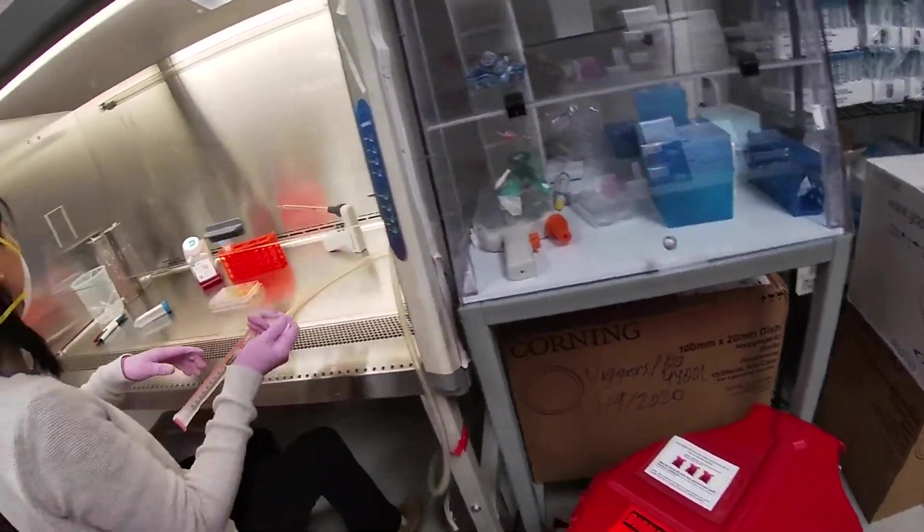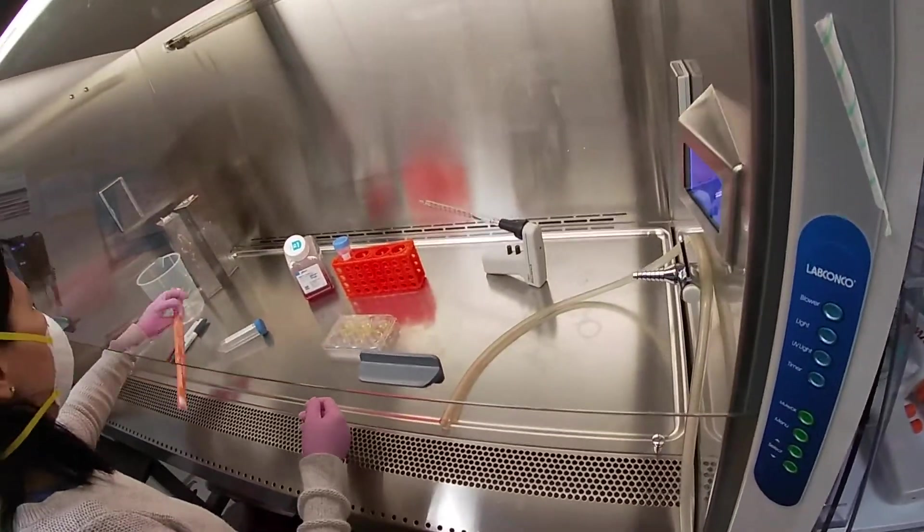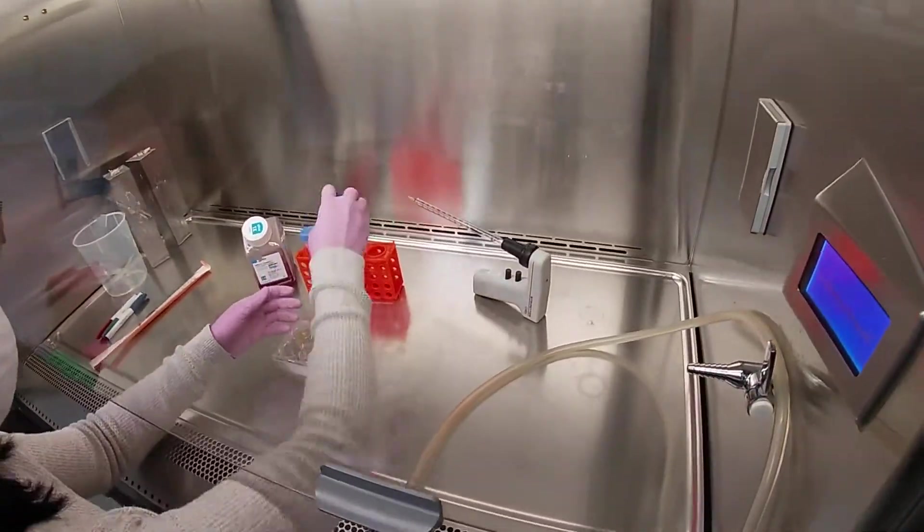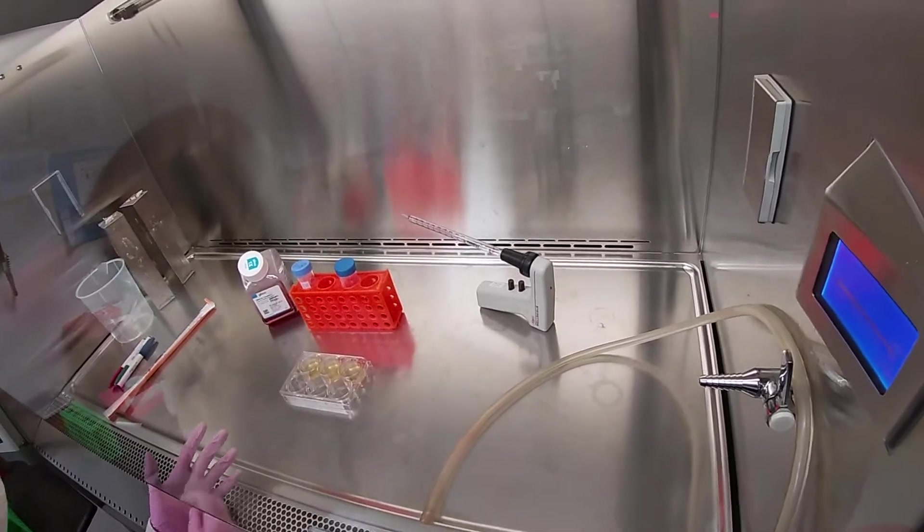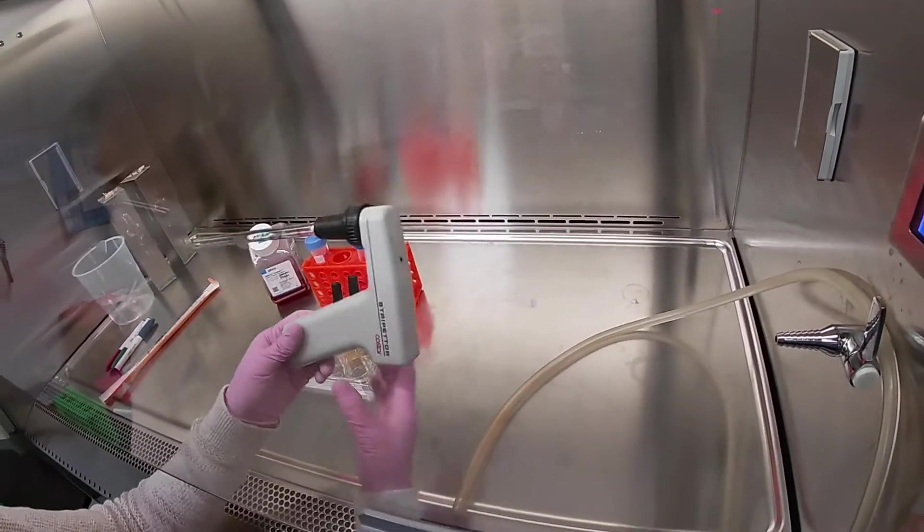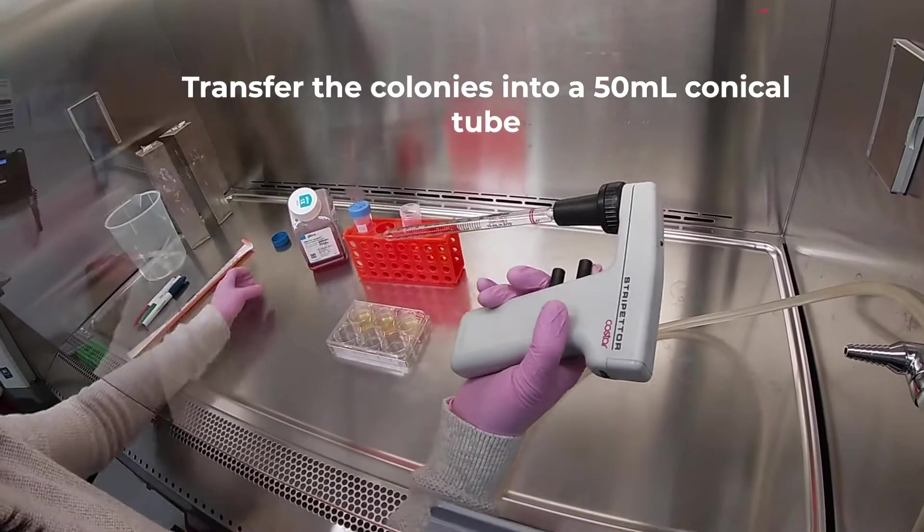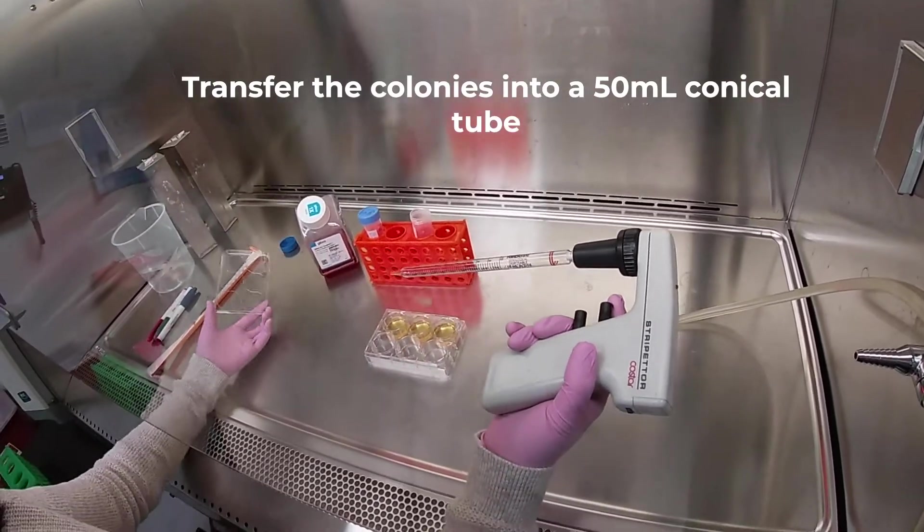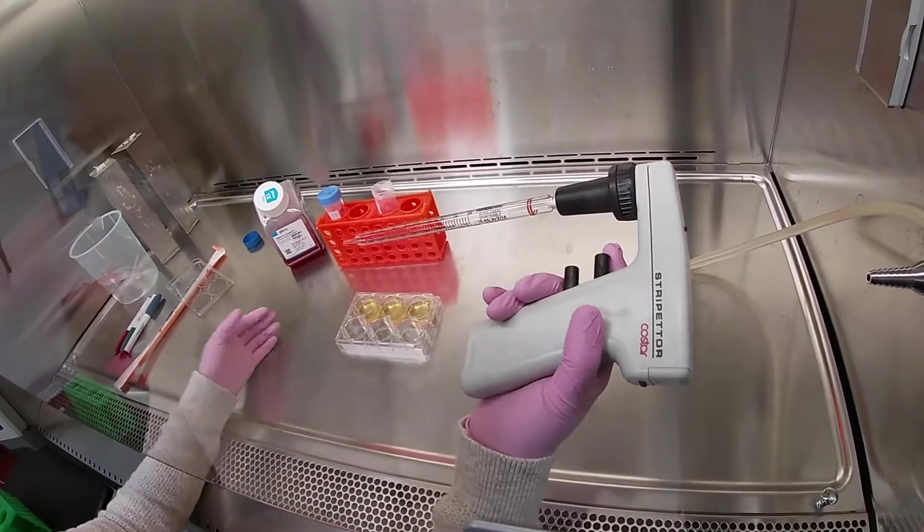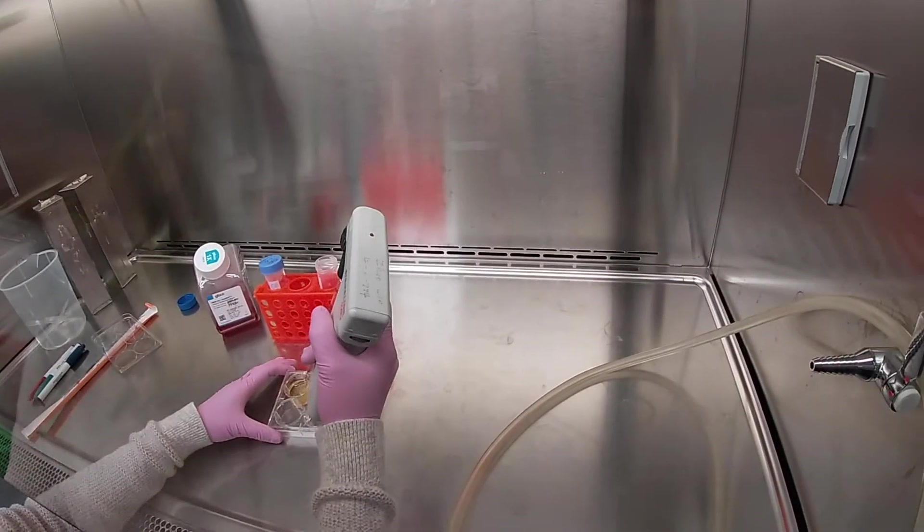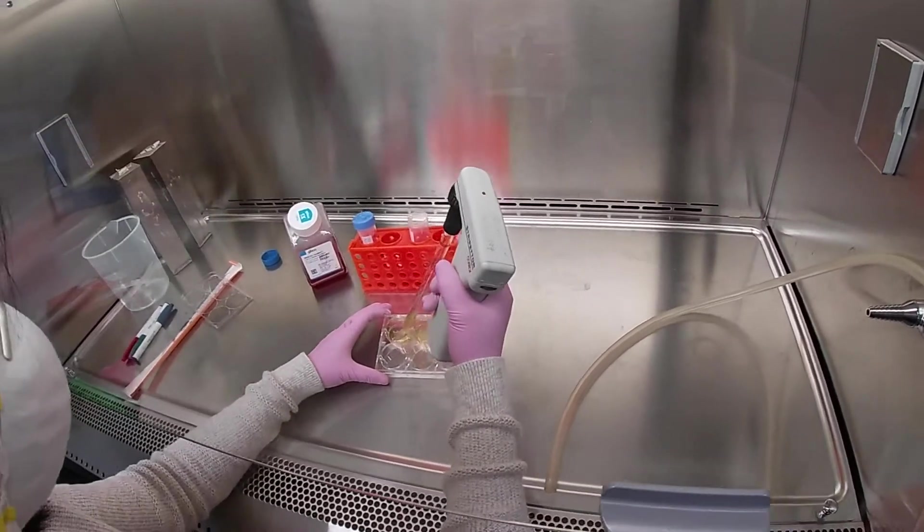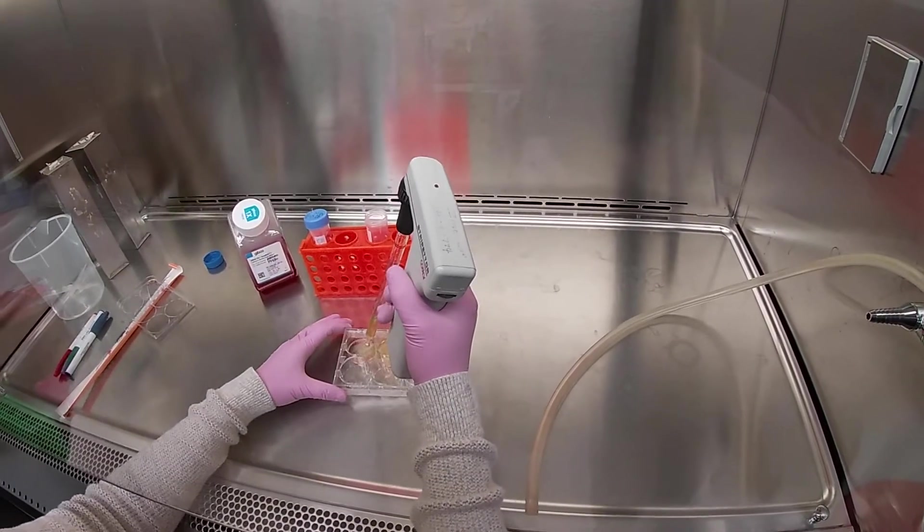Take the ultra-low attachment plate to the biosafety cabinet and we're going to be changing media today. We're going to be using EB20 to continue with embryoid body formation. Transfer all the colonies into a 15mL conical tube. Remember these could break fairly easily, so be careful when you're pipetting up and down.